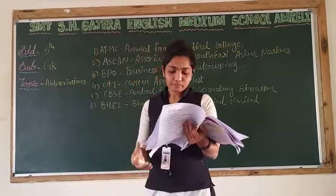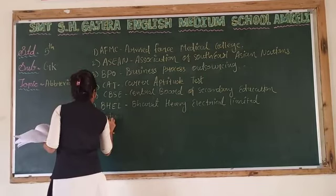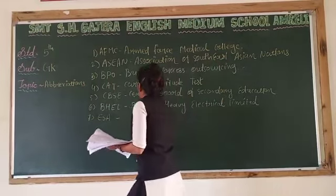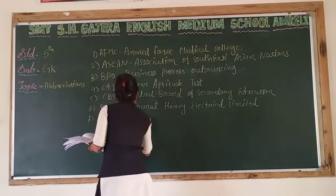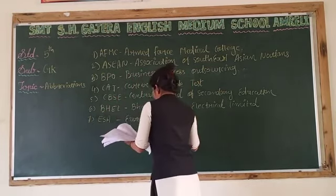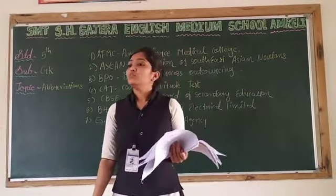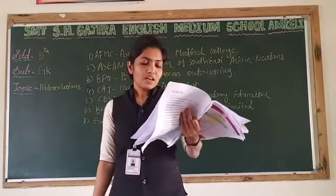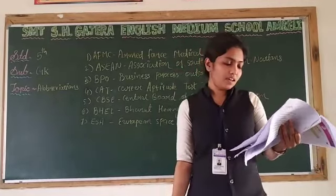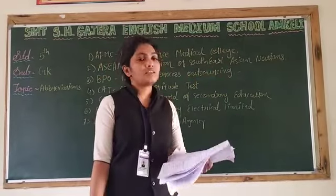Number seven is ESA. ESA stands for European Space Agency. The European Space Agency is headquartered in Paris.